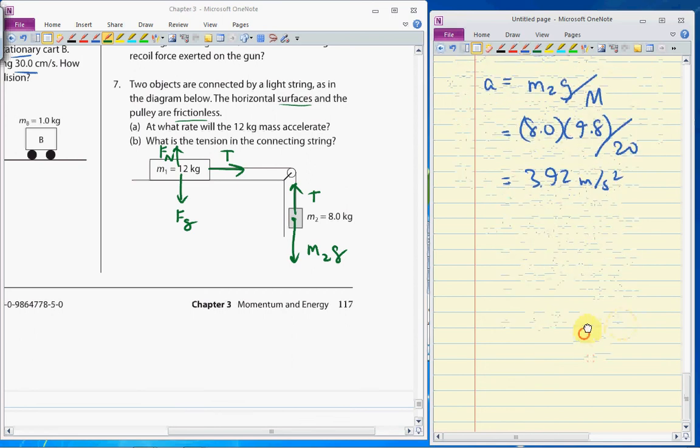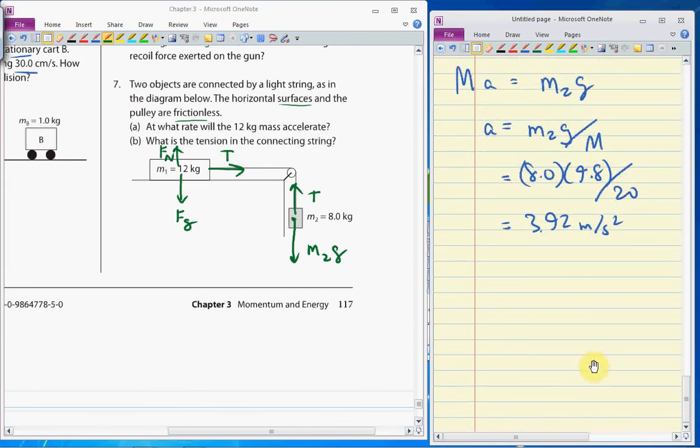They both accelerate at the same rate, so it's appropriate to talk about the 12 kilogram mass accelerating at 3.92 and the 8 kilogram mass accelerating at the same rate. It may seem obvious, but it's important that you realize that, because based on that calculation, we can then figure out what the tension is in the string by returning to the fact that we know that M1A is equal to the tension.